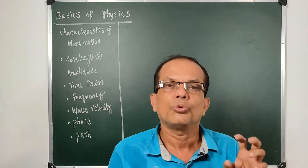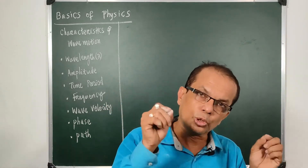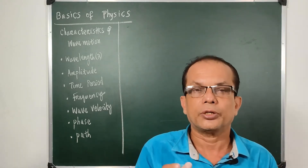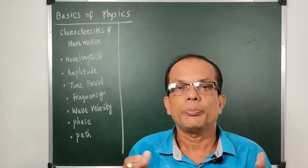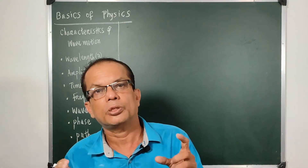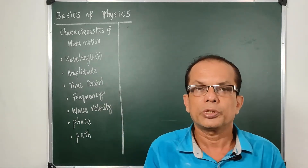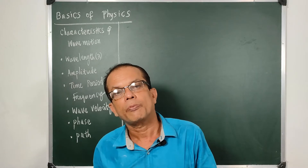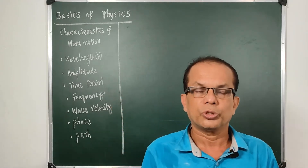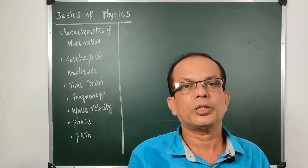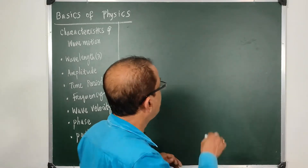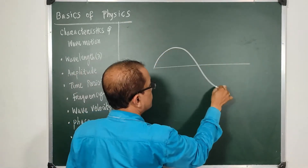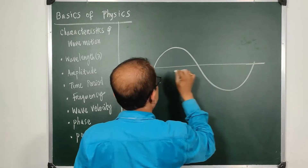Today we are going to cover wave characteristics — the values or properties that practically define waves. Waves generally have six to seven characteristics. The first is wavelength. If you take a transverse wave, you can observe the pattern of vibration.